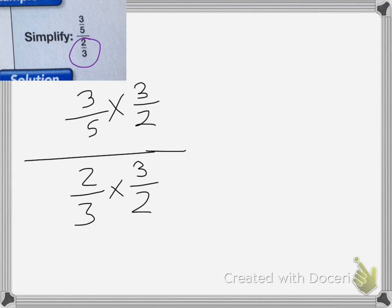So I end up with 3 fifths times 3 halves is equal to 9 tenths, over 2 thirds times 3 halves, which is equal to 1. Now any number over 1 is equal to itself, so it's going to equal 9 tenths.